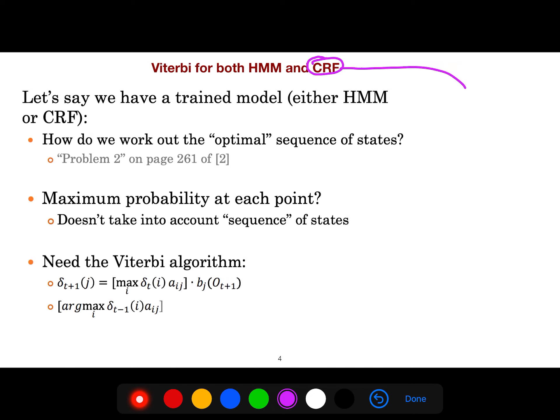Let's say we have a trained model, either hidden Markov model or conditional random field. Everything, we have learned everything. We have learned the transition matrix. We have learned all the parameters of emission. Now that we have all the parameters and we have trained our model, how do we actually work out the optimal sequence of states? This is the problem.